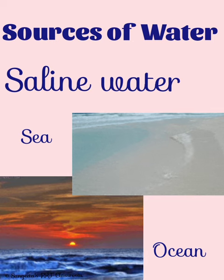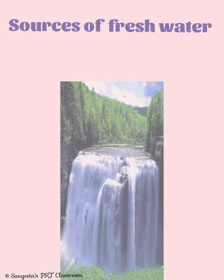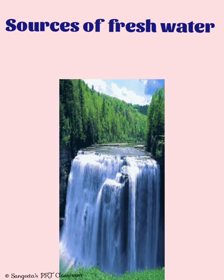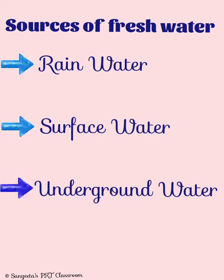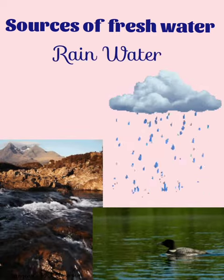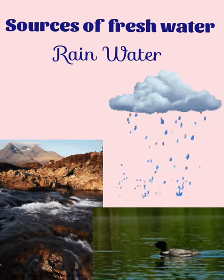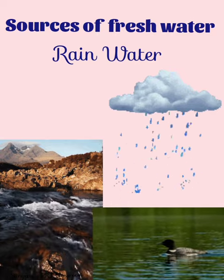Saline water contains a high amount of salt and so it cannot be used for drinking. The sources of fresh water can be broadly classified into three main categories: rain water, surface water and underground water. Rain water is the main source of fresh water on earth — it fills rivers, lakes, ponds, etc.